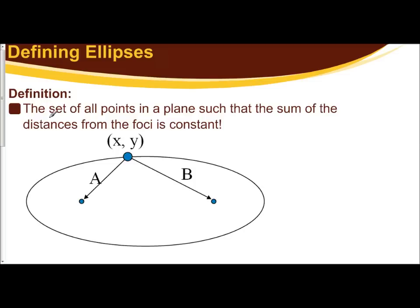An ellipse is defined as the set of all points in a plane such that the sum — and that's important to note — is that it's the sum of the distances from the foci is constant. Being this the first time you've heard of an ellipse, that definition might not mean anything to you. So let's look at what it means as a picture.